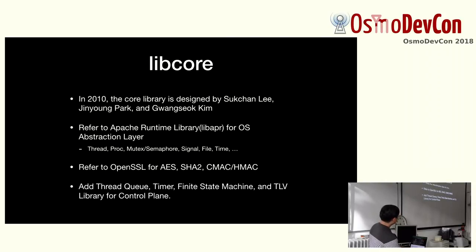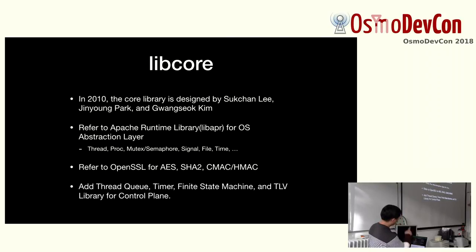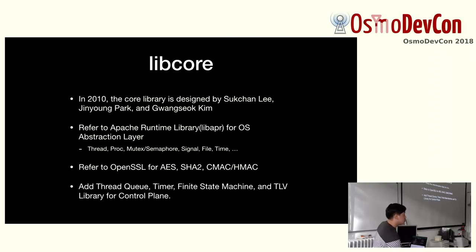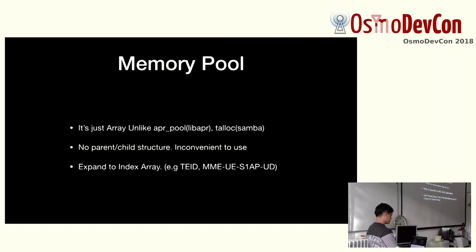For the remaining parts, we solely designed a thread queue — this is for a producer-consumer worker pattern. We have a finite state machine; I think OSMO FSM is much better in my opinion, but ours is a very simple library. We also have TLV — type-length-value — libraries.